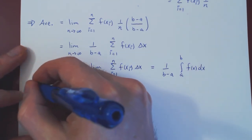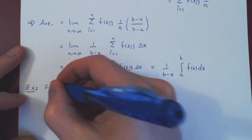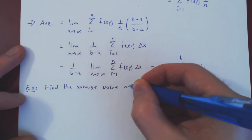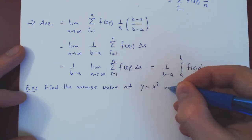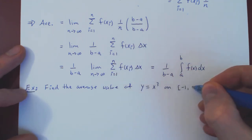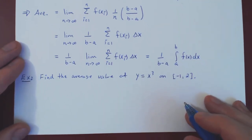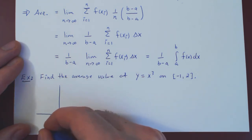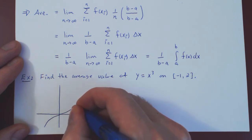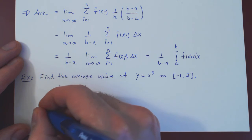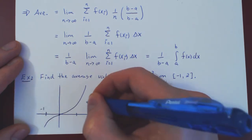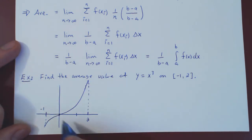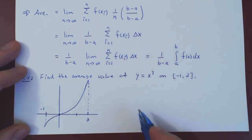Let's consider an example. Find the average value of y = x³ on the interval from −1 to 2. We can visualize the graph — x cubed has a simple shape — over the interval from −1 to 2.